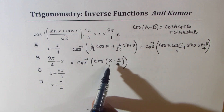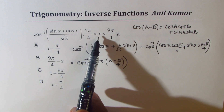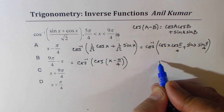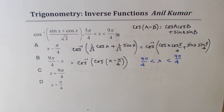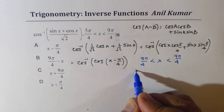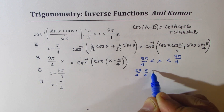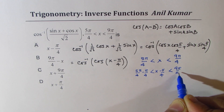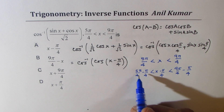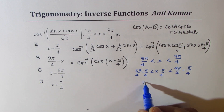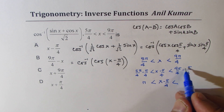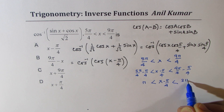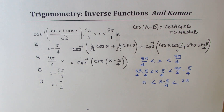We should not directly write x − π/4 as the answer. We have to check: x is between 5π/4 and 9π/4. Subtracting π/4: x − π/4 is between 5π/4 − π/4 = π and 9π/4 − π/4 = 2π. So x − π/4 lies between π and 2π. But cos inverse is defined only on [0, π].